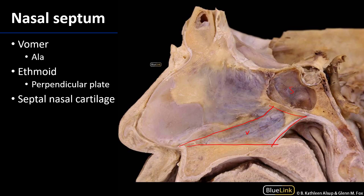Superior to the vomer is the perpendicular plate of the ethmoid, descending down from the roof of the nasal cavity. Anterior to the ethmoid and anterosuperior to the vomer is the septal cartilage.